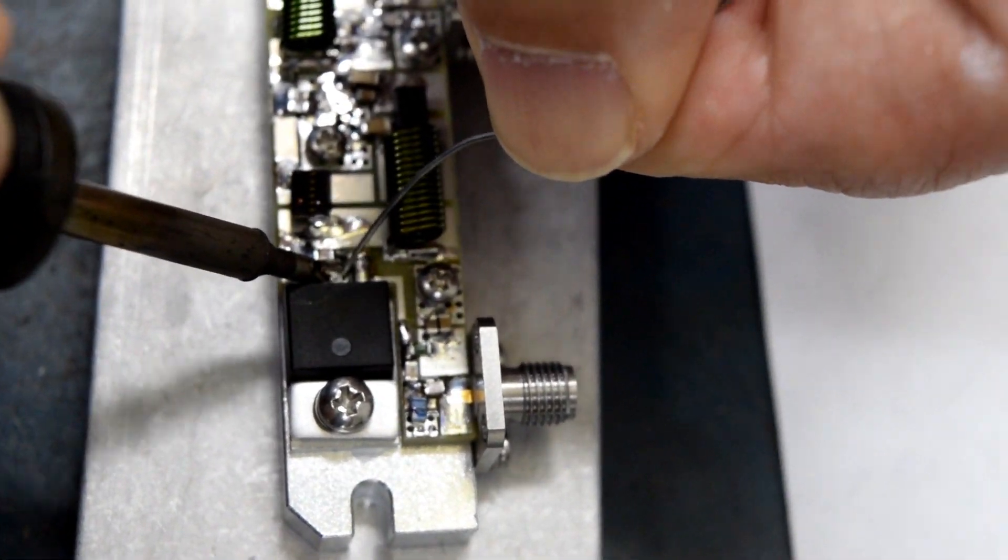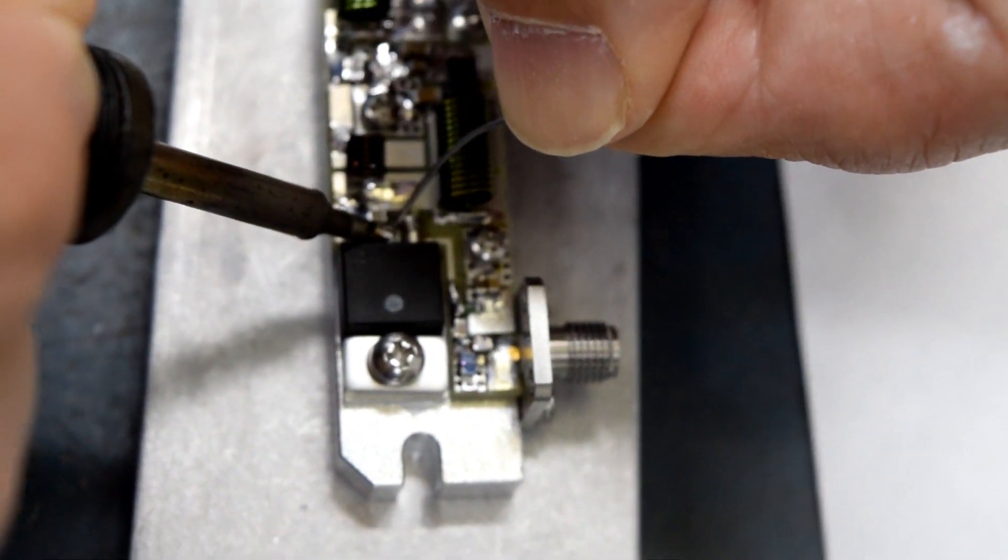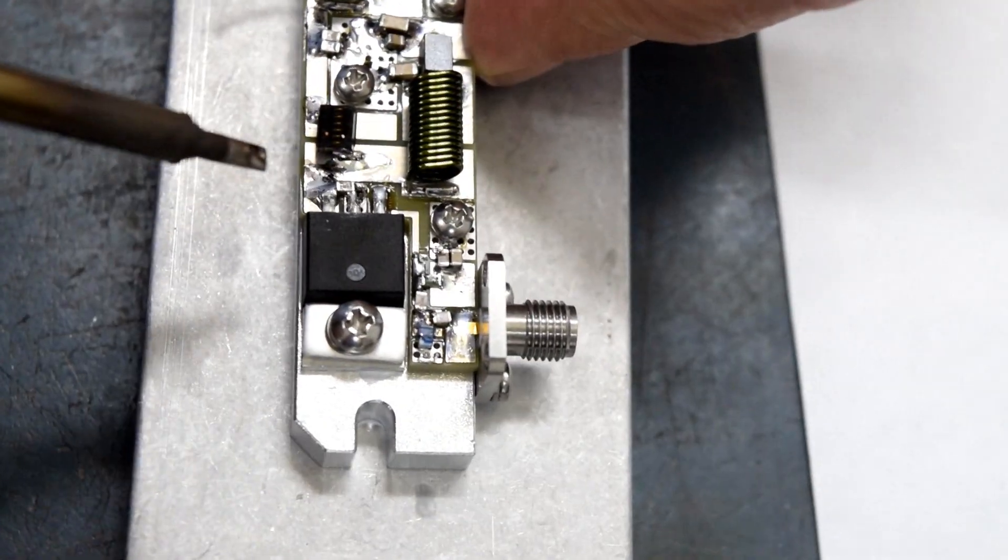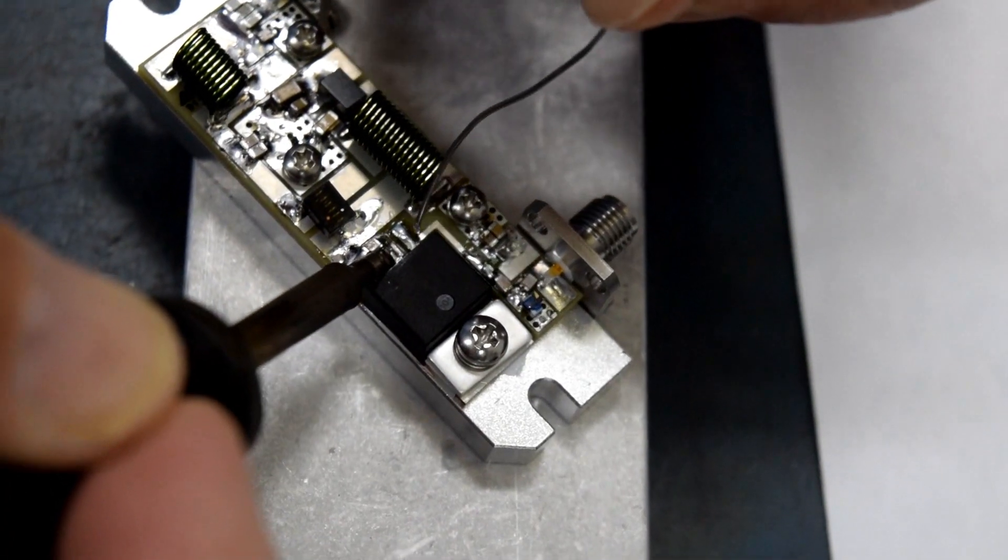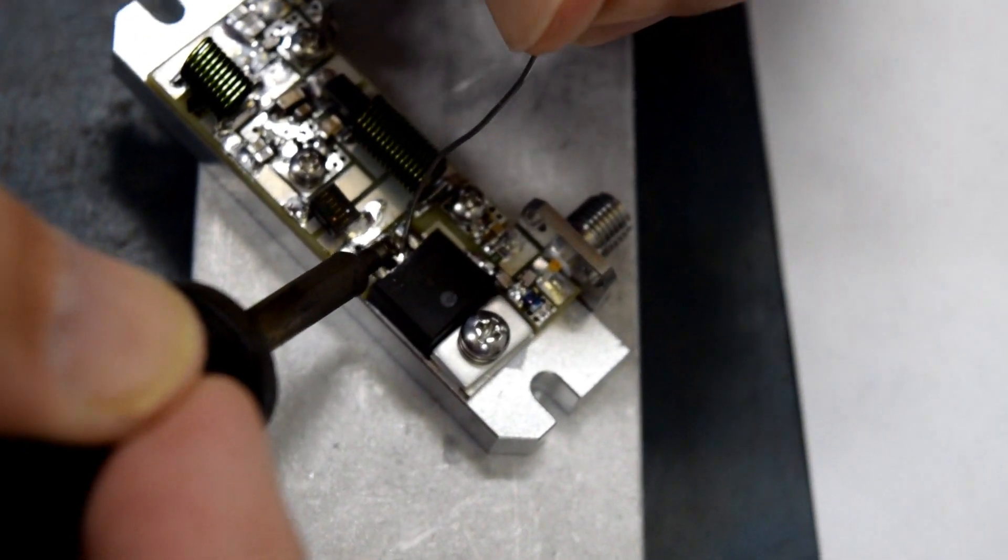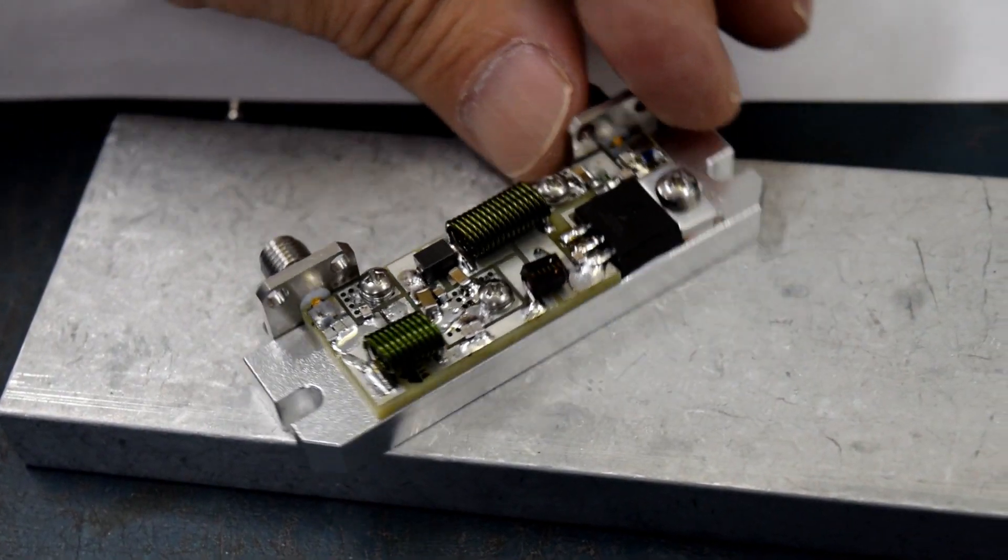After the screw is tightened, it's time to solder the leads. The leads should not be soldered before the screw is tightened. Tighten the screw, then solder the leads. This minimizes the stress on the lead.